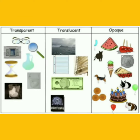Different objects are made up of different materials. Hence they allow different amounts of light to pass through them. And depending on the amount of light that can pass through objects, they can be grouped into transparent, translucent, and opaque objects.